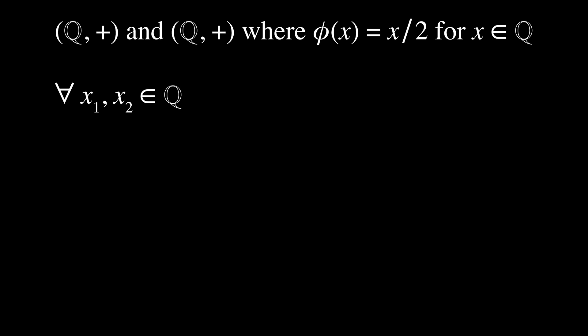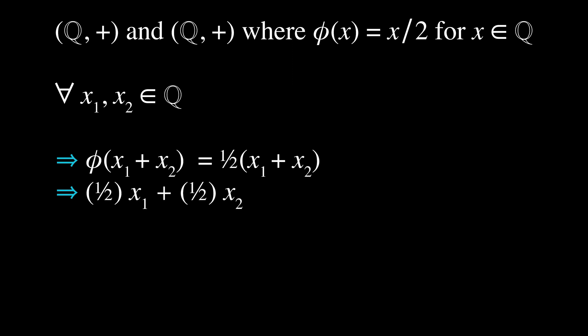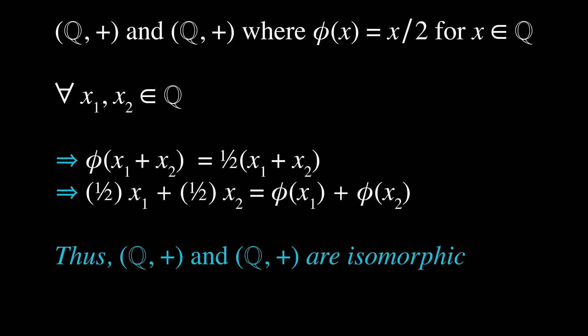Finally, we need to show that the homomorphic property holds. Suppose for all x₁, x₂ in ℚ, we have φ(x₁ + x₂) = (1/2)(x₁ + x₂) = (1/2)x₁ + (1/2)x₂ = φ(x₁) + φ(x₂). Thus we have shown that the homomorphic property holds, and therefore the two structures (ℚ, +) and (ℚ, +) are isomorphic.